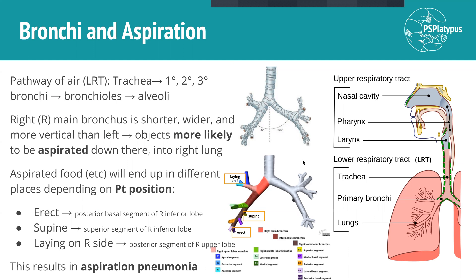Now all of that is just to give you a basic framework to orientate yourself to the anatomy. Really what we need to know is that the right main bronchus is shorter, wider, and more vertical than the left main bronchus, as you can see here. What this means clinically is that objects are more likely to be aspirated down the right main bronchus and into the right lung.